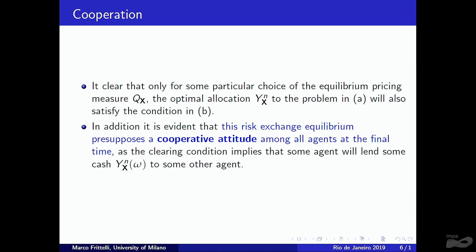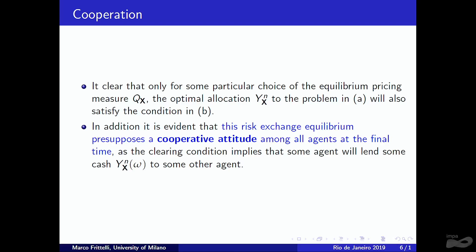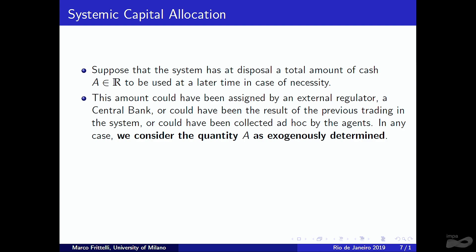The key point is that you must select the probability measure Q such that the solution of each single-agent problem also satisfies the clearing condition. This requires cooperation among agents, as they exchange random variables at the final time. This completes the description of risk exchange equilibrium; now we move to systemic capital allocation.